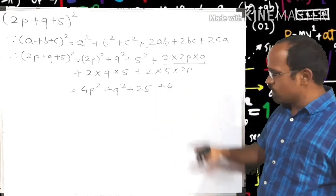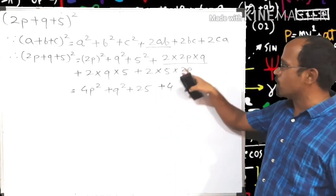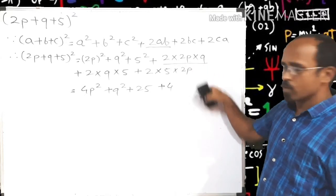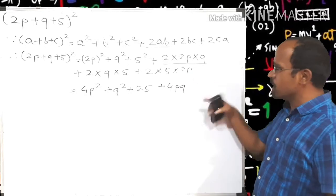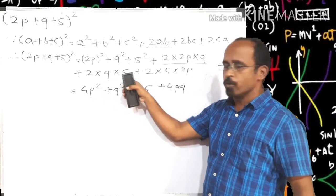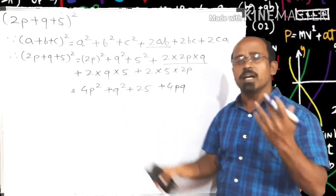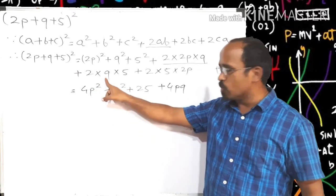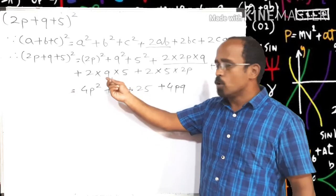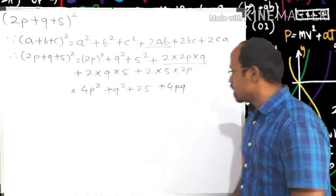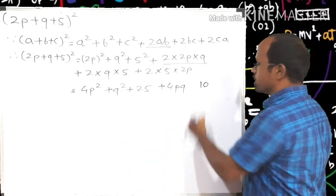Next multiplication is 2 into q into 5. Once again multiply their coefficients: 2 into 1, coefficient of q is 1, 2 into 1 is 2, then 2 into 5 is 10, so multiplication equals 10.